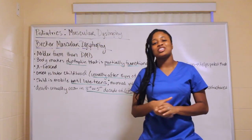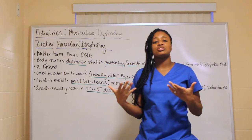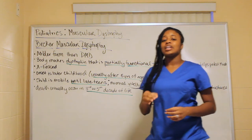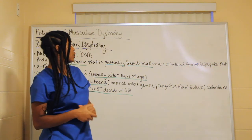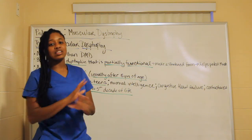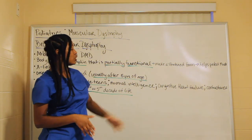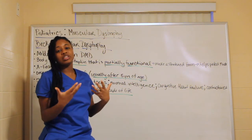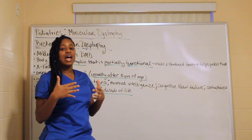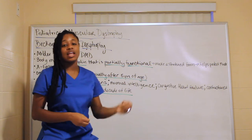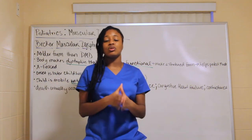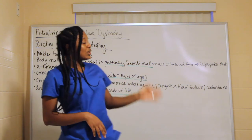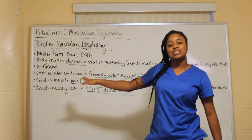Becker's muscular dystrophy is similar to Duchenne, but it is a milder form. The body does produce dystrophin, but it is only partially functional. It's made in a shorter form of the protein, which at least helps protect the muscle and slows the rate of disease progression.